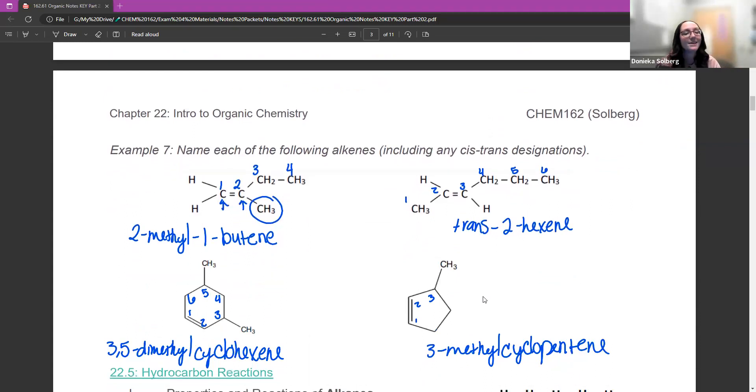Name each of the following alkenes, including any cis or trans designation. If I'm looking at this first molecule here, my longest chain I have one, two, three, four carbons. I do have to include that double bond. I want to start numbering on the side closest to the double bond. So this is carbon one, two, three, four.